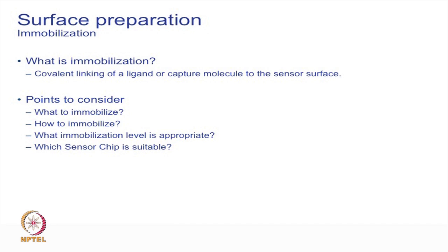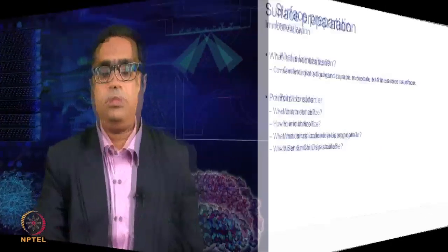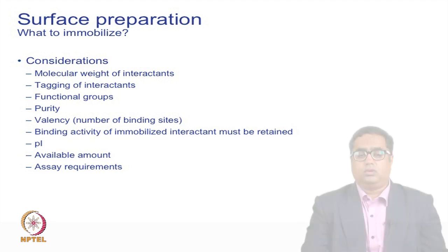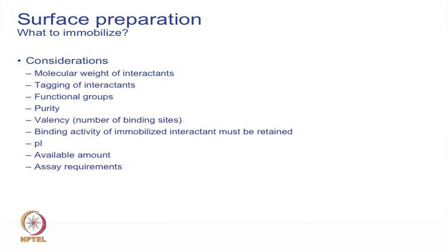When we actually try to go for an immobilization, the very important points to consider are what to immobilize, how to immobilize, what is the appropriate level and what is the right sensor chip required. We need to know a great amount of information about the protein or macromolecule being immobilized - its molecular weight, tags present, functional groups, PI, purity, available amount, required assay conditions, binding activity, and valency.